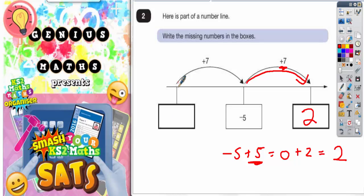Now this box, we are adding 7 when we go this way. But we need to work backwards to go the other way to see where we started on.